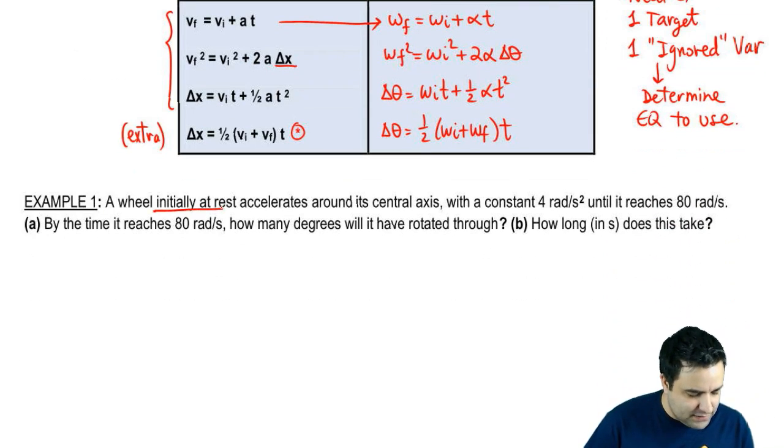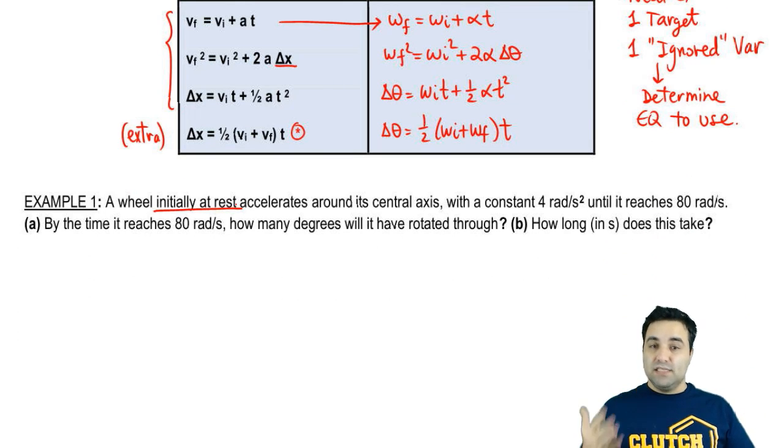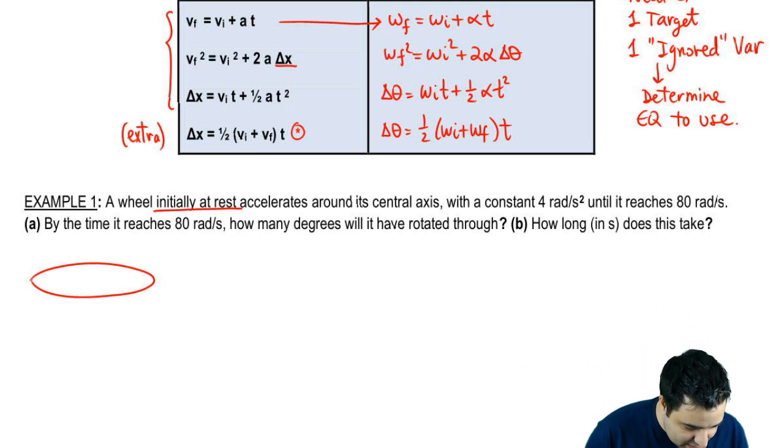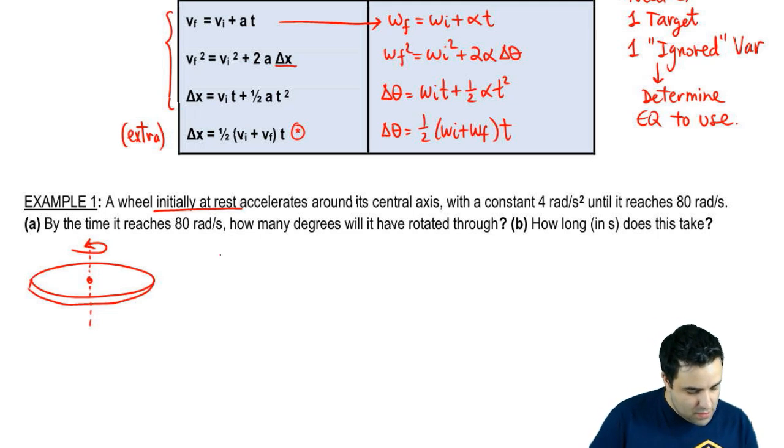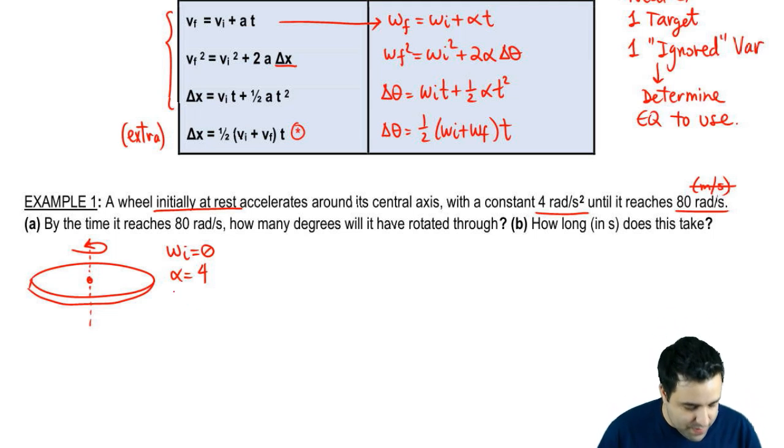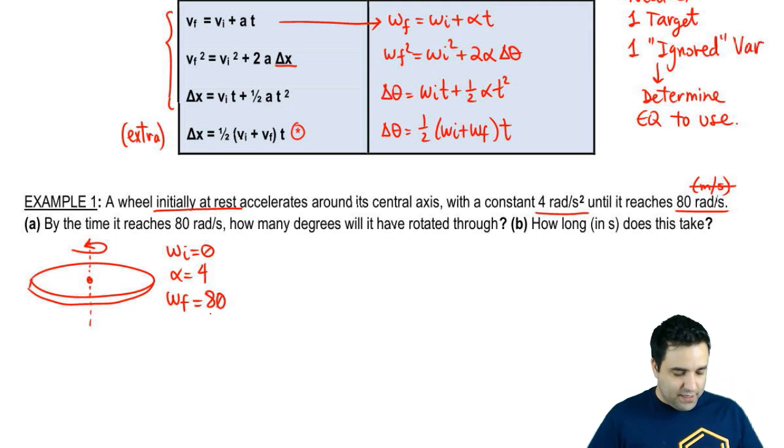Let's do some examples. A wheel initially at rest. So initially at rest means the initial angular velocity is zero, because this wheel is going to rotate around its central axis. You can think of it as a big disk with a central axis and it can spin around it. It starts from rest, so initial omega is zero, and it's going to accelerate with a constant 4 radians per second squared, so alpha equals 4, until it reaches 80 radians per second. Omega final equals 80 radians per second.